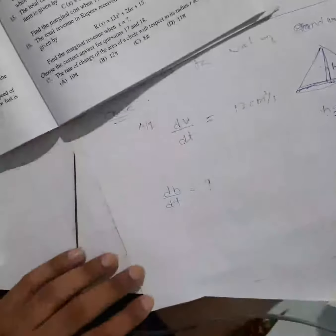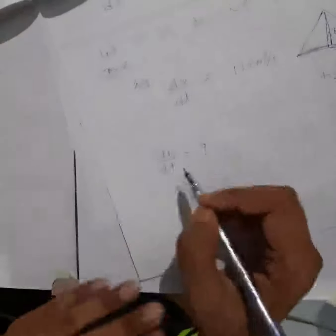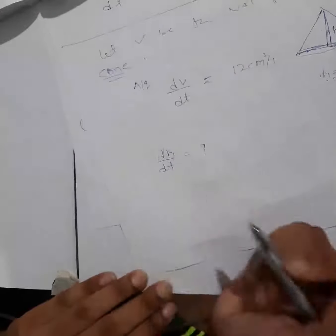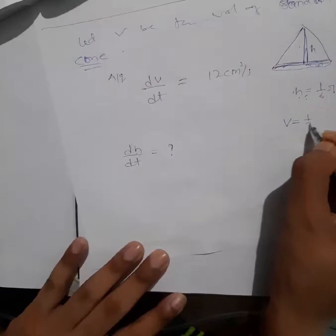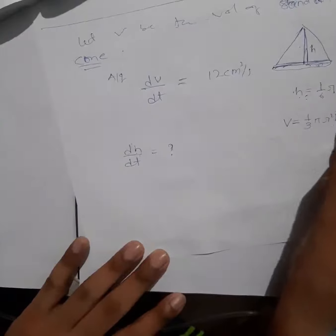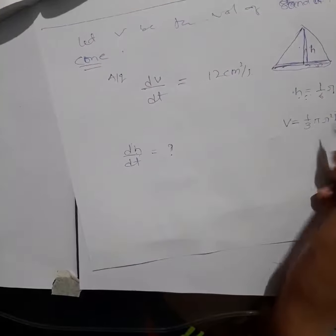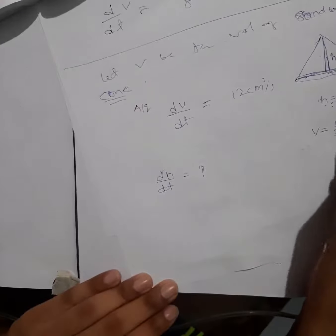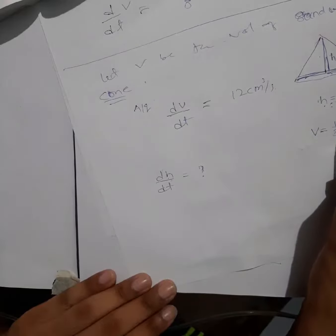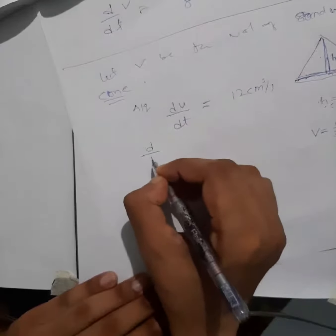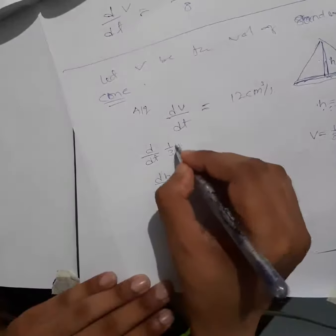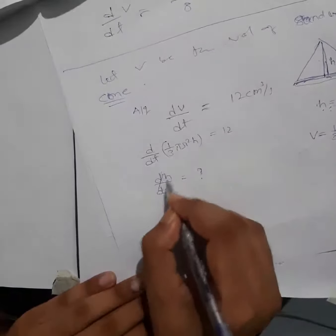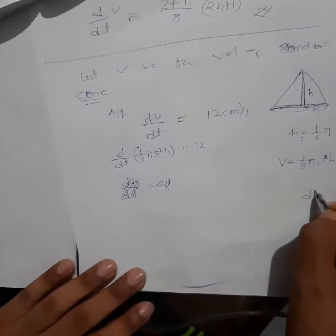The volume of a cone is V = (1/3)πr²h. Differentiating with respect to time: d/dt[(1/3)πr²h] = 12. We need dh/dt. Since both r and h are variable, we need a substitution to reduce to one variable.